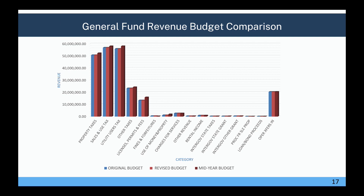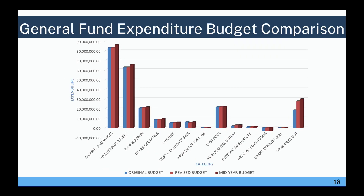Here we have a comparison between the original budget, the revised budget, and the mid-year budget — all before the mid-year adoption done in March. The three bars show the high points: property tax being the highest, then sales and use tax, and utility user tax as the three big revenue categories. On the expenditure side, the highs are salary and wages, payroll and fringe benefits, operating transfers out, cost pool, and professional admin.